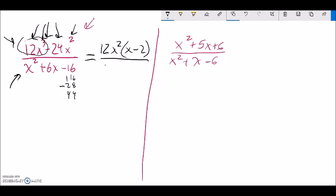So if I go like this, 8 times negative 2 is negative 16, but it also adds to 6. So this should factor to x minus 2 times x plus 8.